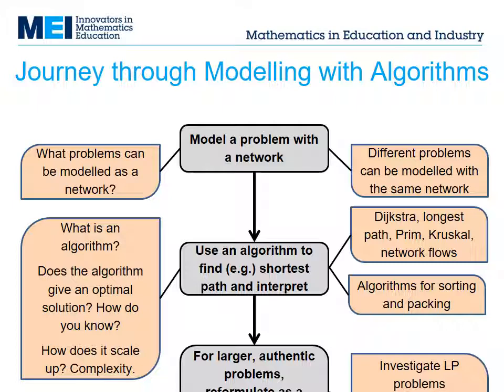There's an algorithm for finding a shortest path through a network — Dijkstra — and it can be applied to problems like these. But how do we know that algorithms like these always give the best answer? And how long will it take to apply the algorithm?